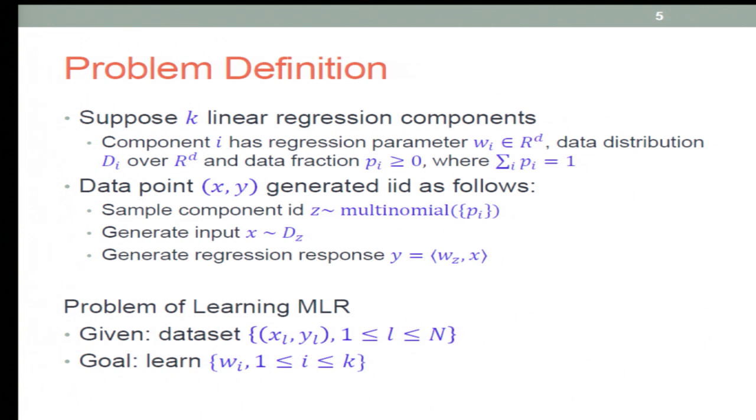Here is the setup. We assume that the data points are drawn IID from the following procedure: you first sample the components from a multinomial distribution, then you generate the data. The distribution of each component can be different. This is a key difference between this work and previous work on learning mixture of regression models. Then you generate the response, which is noiseless. The goal is to learn the parameters.